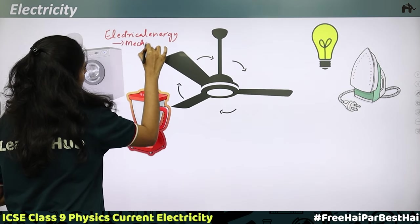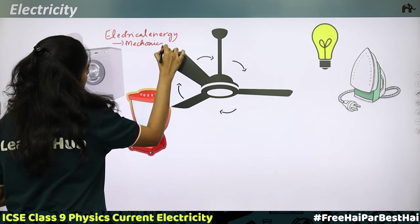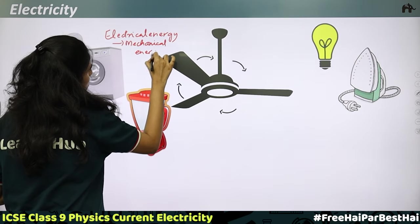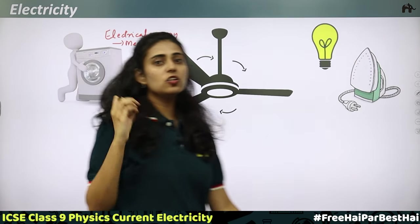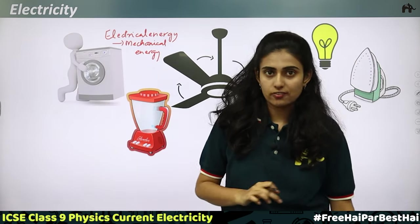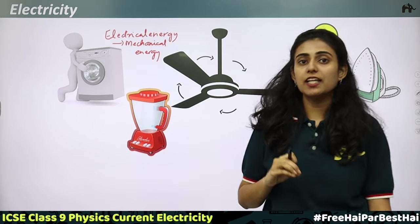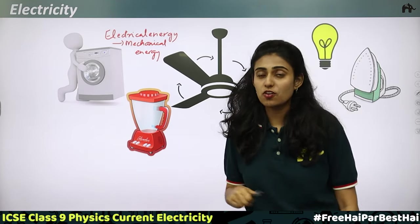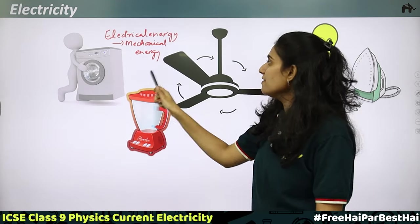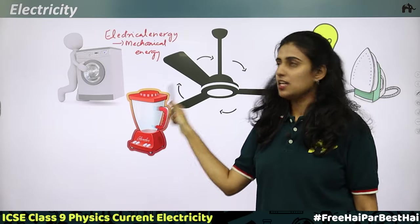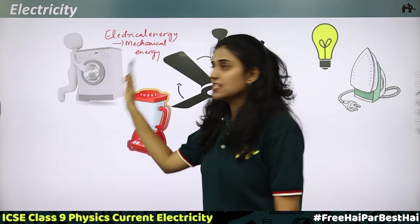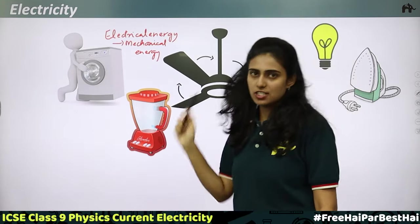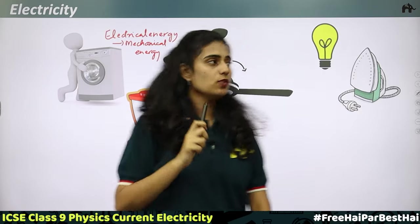We know the law of conservation of energy. According to the law of conservation of energy, energy can neither be created nor destroyed, but can be transformed from one form to another. Here, the electrical energy is getting converted into mechanical energy in the case of a washing machine.